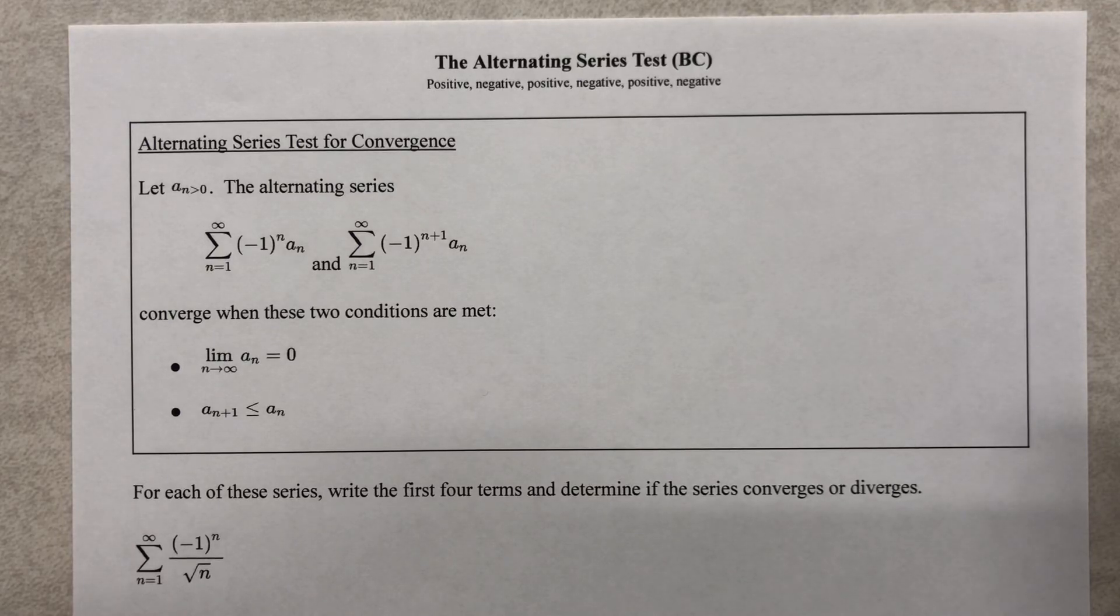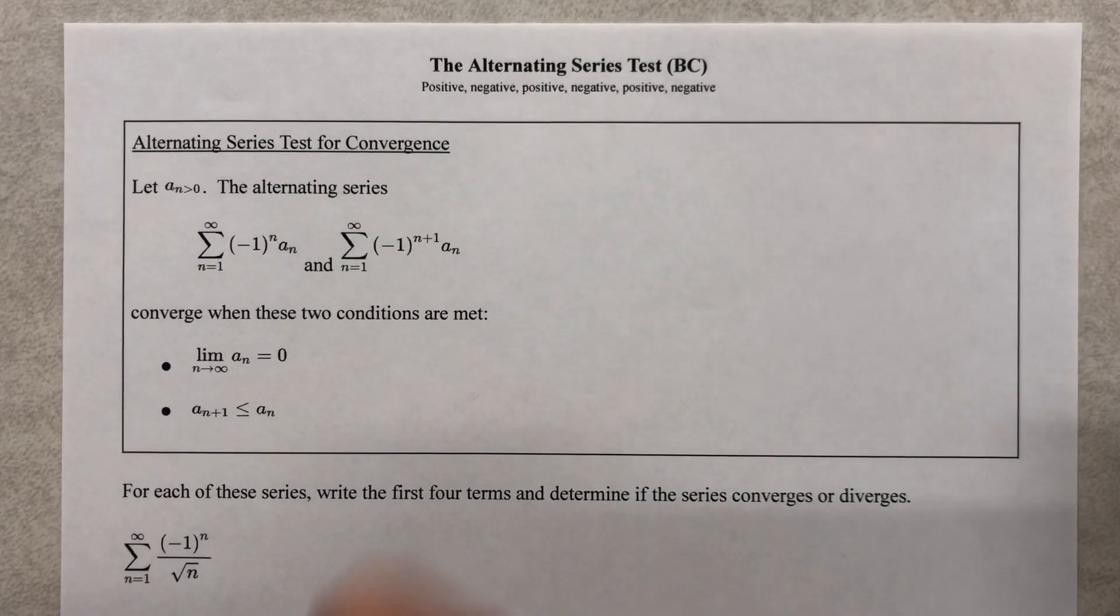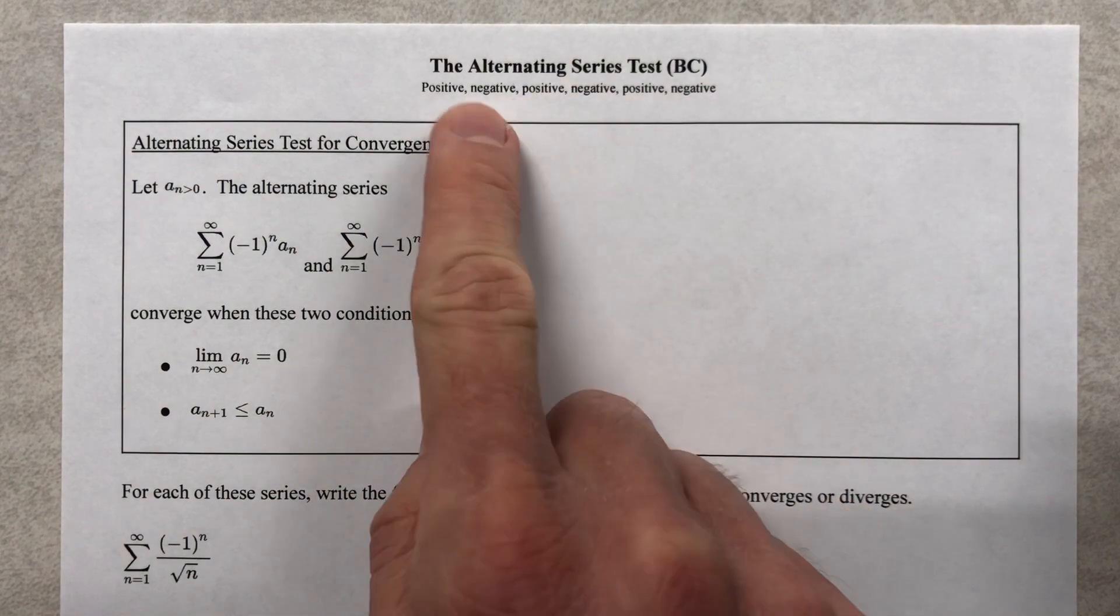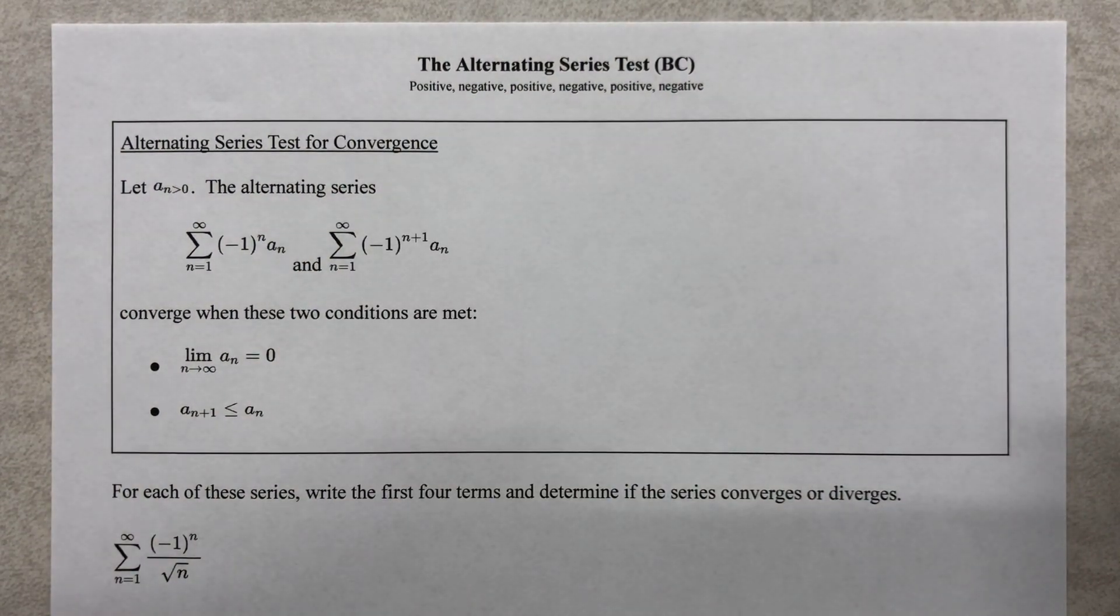Okay, what's an alternating series? Well, it's a series that has alternating signs: positive, negative, positive, negative, or maybe it starts with a negative. Generally they start with a positive, but that's not always the case. I want you to notice the structure of this.